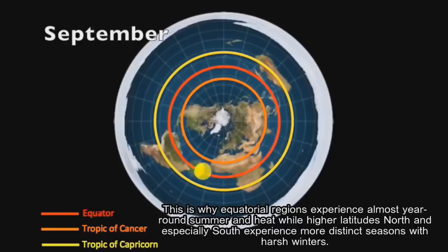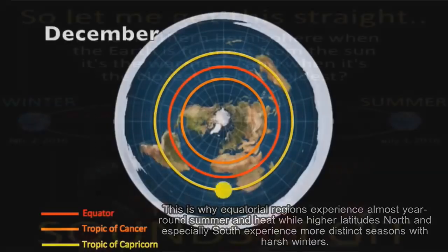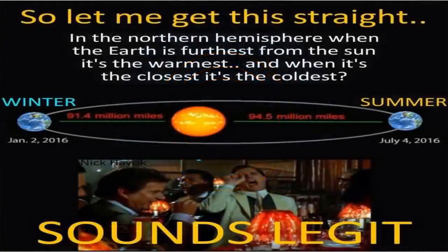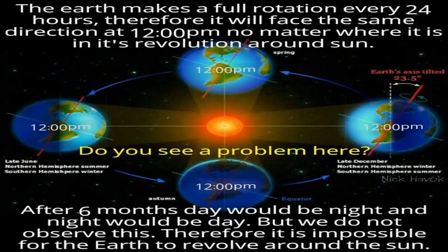The heliocentric model claims seasons change based on the ball Earth's alleged axial tilt and elliptical orbit around the Sun. Their flawed current model even places us closest to the Sun — 91,400,000 miles — in January, when it is actually winter, and farthest from the Sun — 94,500,000 miles — in July, when it's actually summer throughout much of the Earth. They say due to the ball Earth's tilt, different places receive different amounts of direct sunlight, and that is what produces the seasonal and temperature changes.